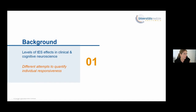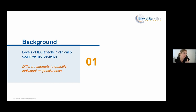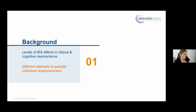Before I talk about field simulation studies, I want to briefly show what the typical study designs are that we use in clinical and cognitive neuroscience. We usually use brain imaging techniques or behavioral performance to assess the effects of TDCS on a group level. Whether a subject responded to stimulation or not on an individual level has been more or less neglected in the past and only recently started to arouse the interest of clinical neuroscientists.